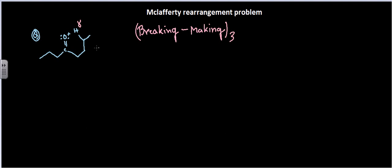In the previous video I hadn't told you about the fish hook arrows, because for McLafferty rearrangement you must show the arrows. I had simply shown you how to delete the part and place the bonding. In this video I'm going to take you through the arrows. These are called the fish hook arrows.